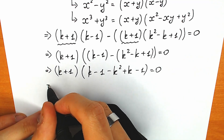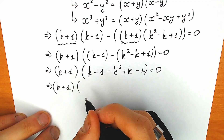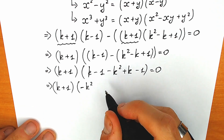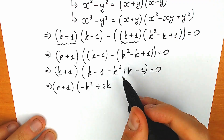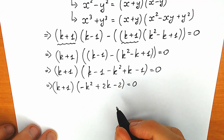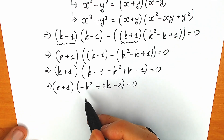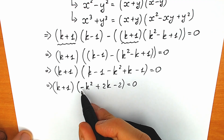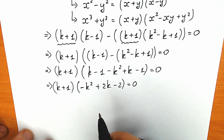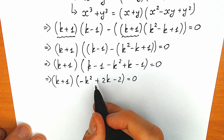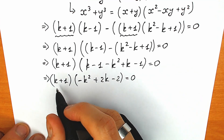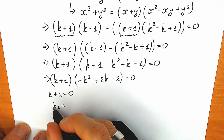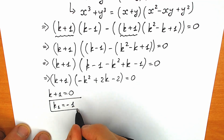Let's simplify this expression. We have (k plus 1) in the beginning. In the other parenthesis: minus k squared, then k plus k gives us plus 2k, and minus 1 minus 1 gives us minus 2, equal to zero. A product equals zero when the first parenthesis equals zero or the second equals zero. Starting with k plus 1 equal to zero: k₁ equals minus 1. This is our first root; we will check it later.